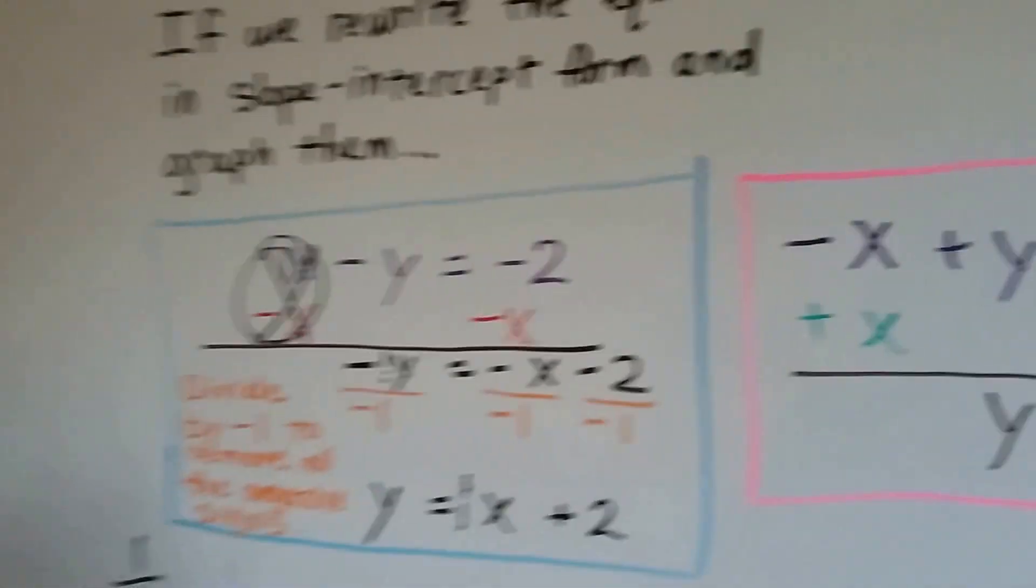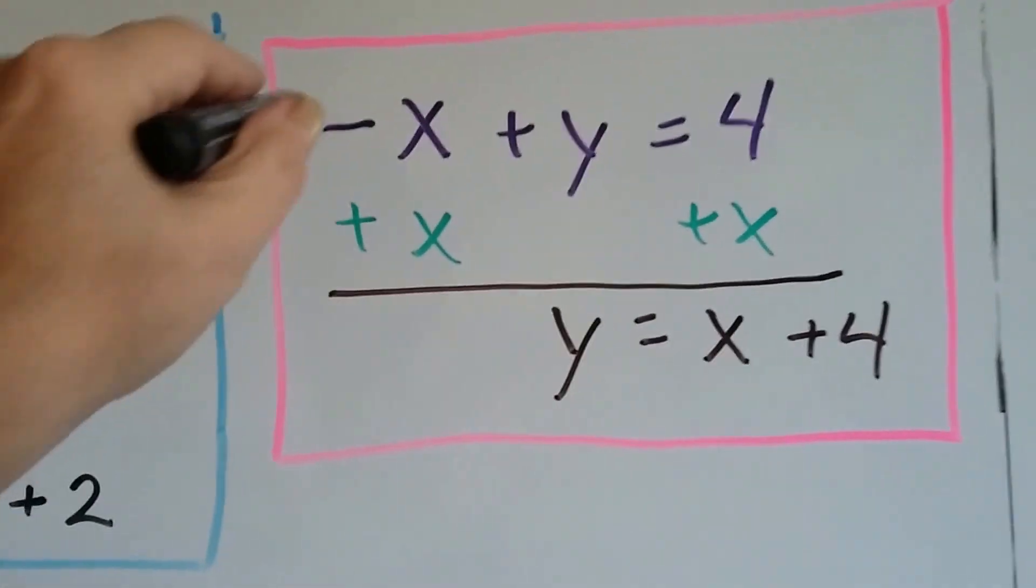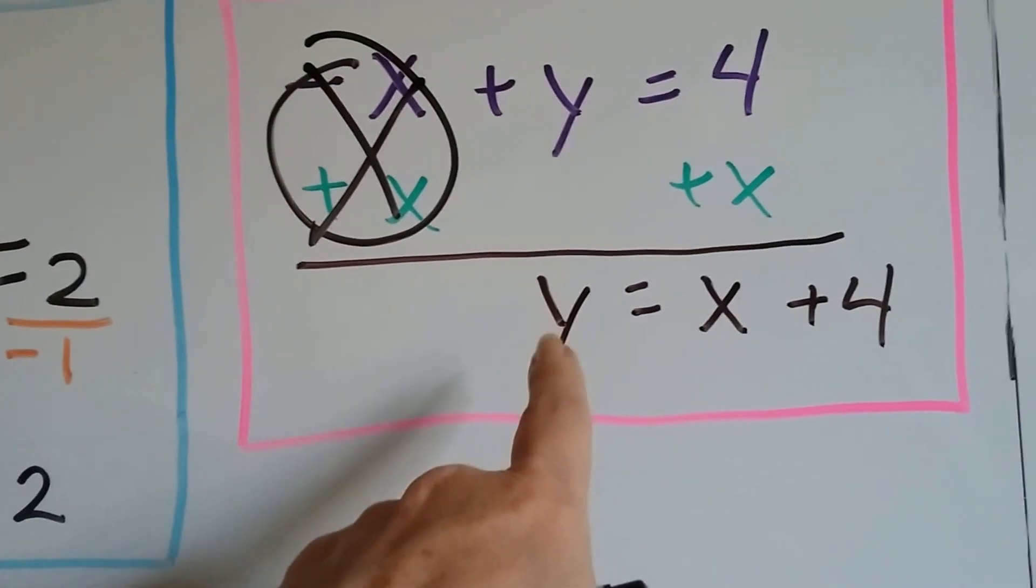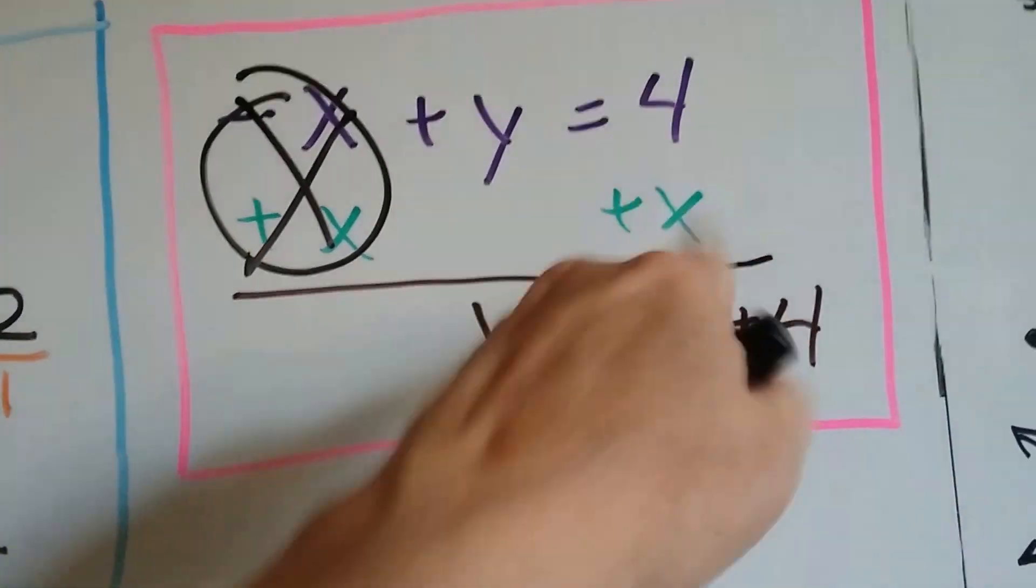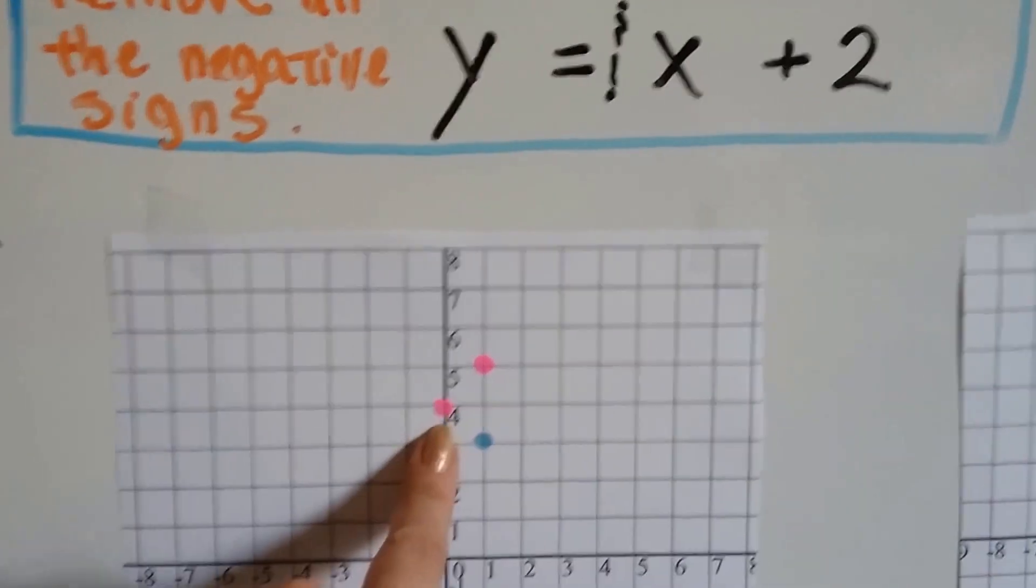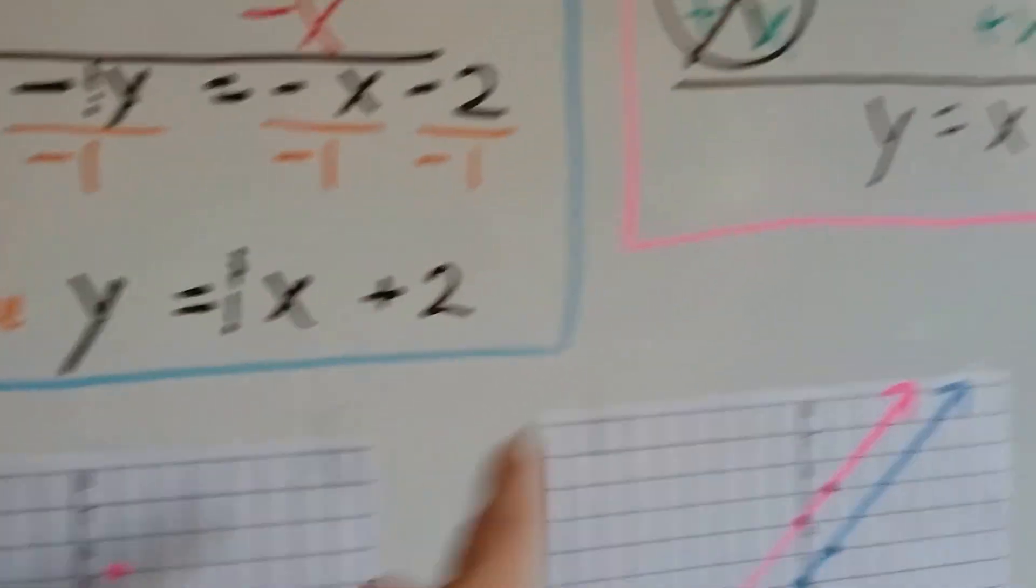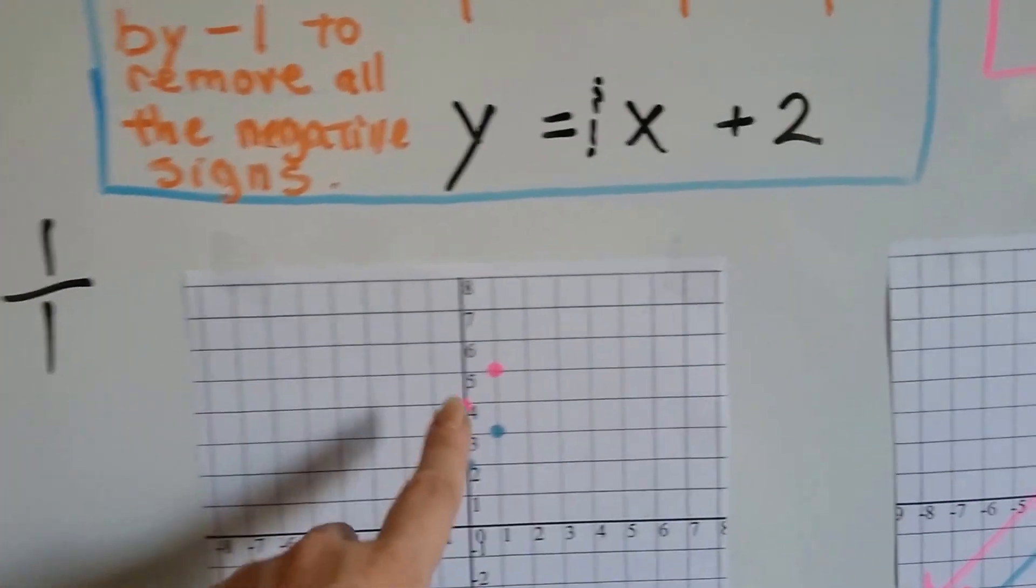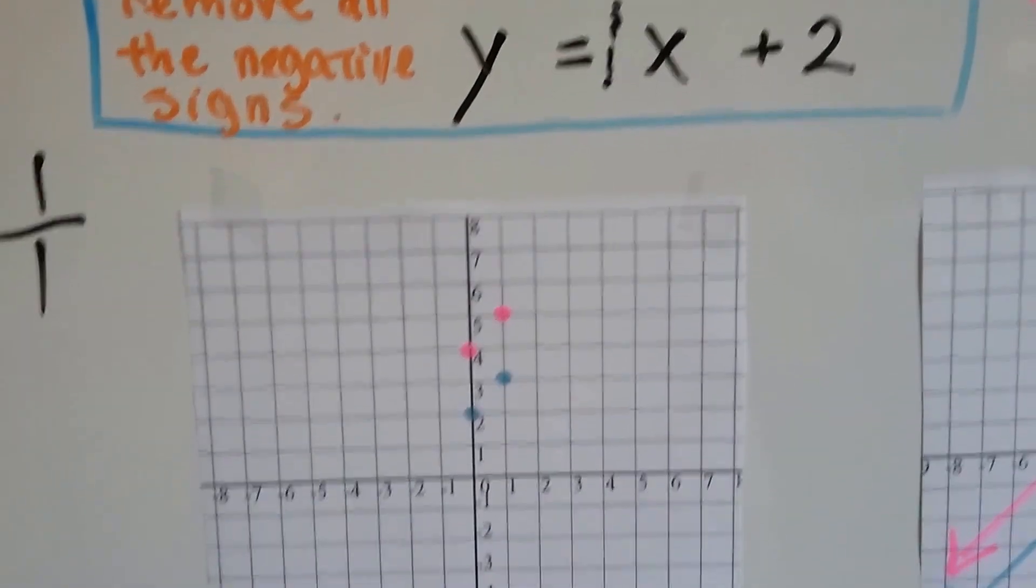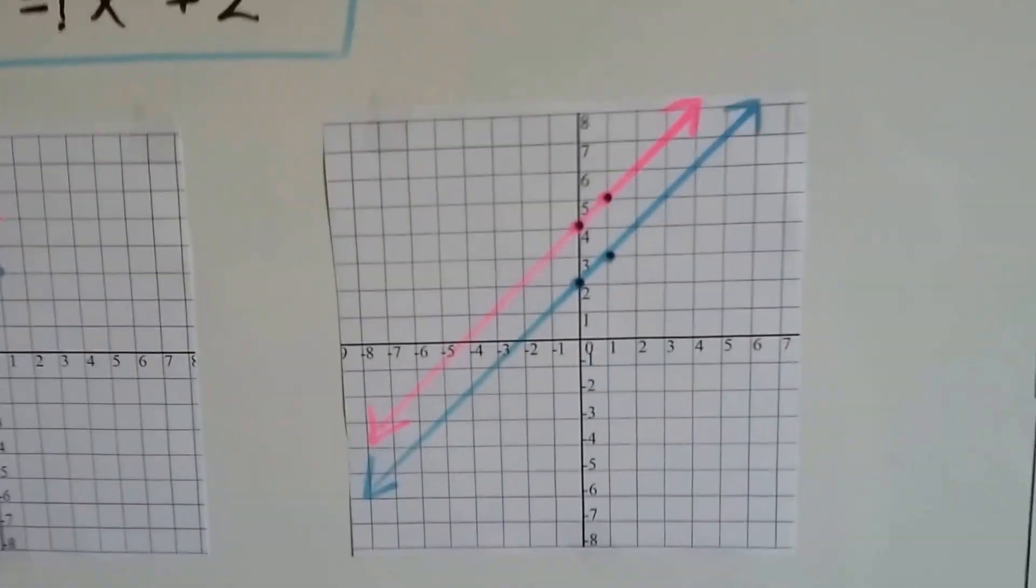Now we've got our second equation, negative x plus y equals 4. So we're going to add x to each side, and that will get rid of this guy and put the y in front in slope-intercept form. Now we've got y equals a positive x plus 4. So now we can graph this. And we've got a positive 4 for our y-intercept, that 4. And our slope is our negative 1 again, that 1 over 1. 1 is the rise, 1 is the run. It puts us right here. Up 1 and over 1. So now we've got our points for the pink line and our points for the blue line, and when we draw the lines through them, we have parallel lines.